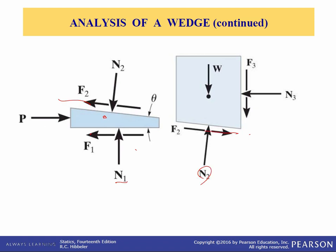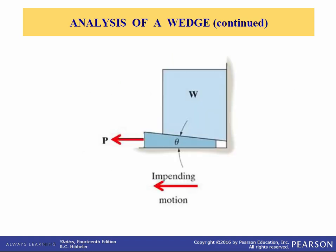With these two free body diagrams, which one should we start looking at first? We should look at the one that has the least amount of unknowns. Here's an important point: if the object is to be lowered, then the wedge needs to be pulled out. If the value of that force comes out to be positive, then we call the wedge self-locking. If it comes out to be negative, then the wedge will eject on its own.